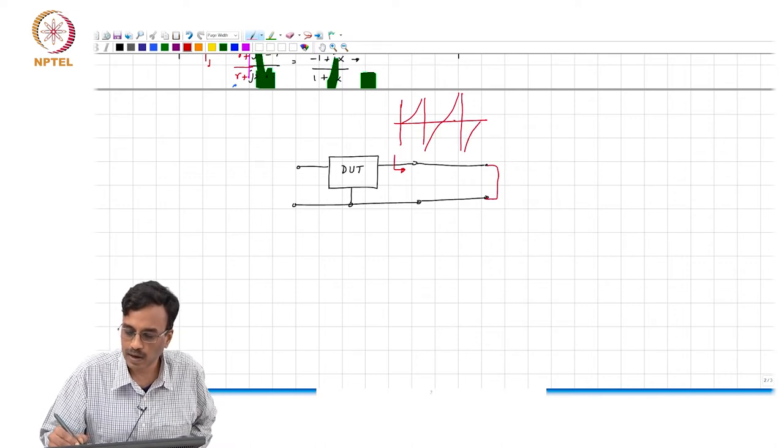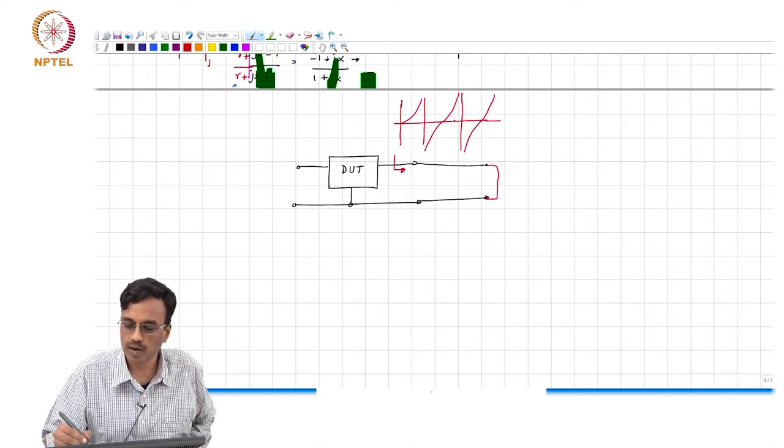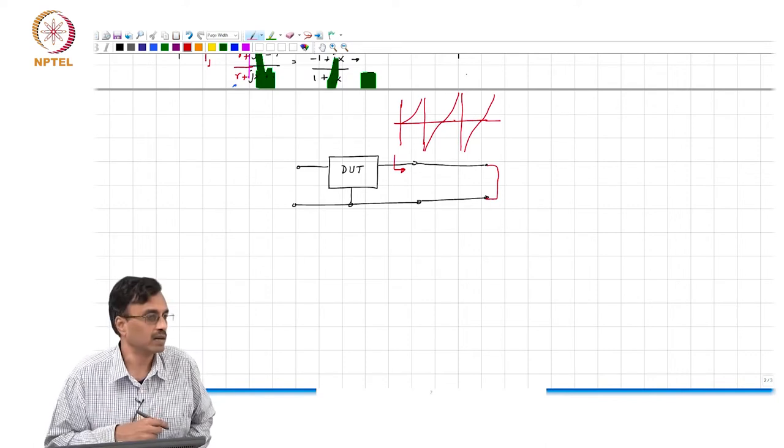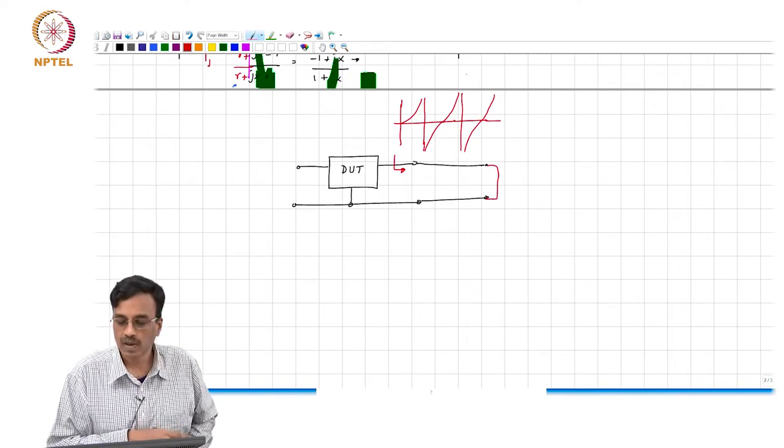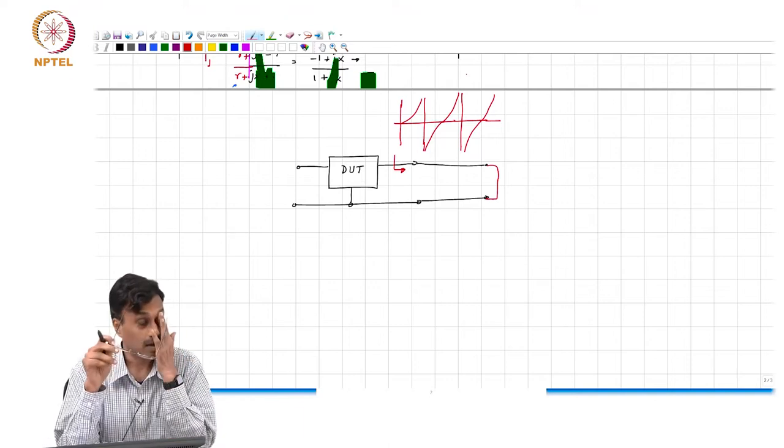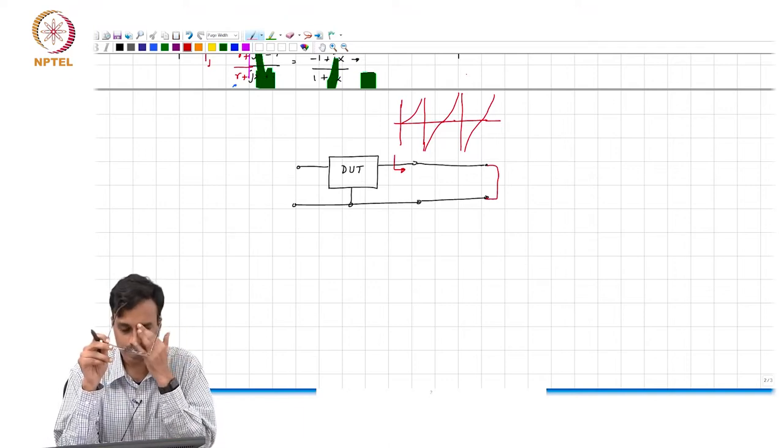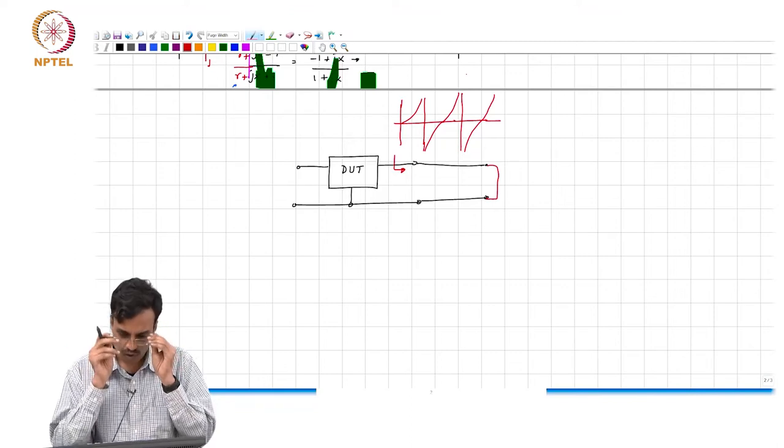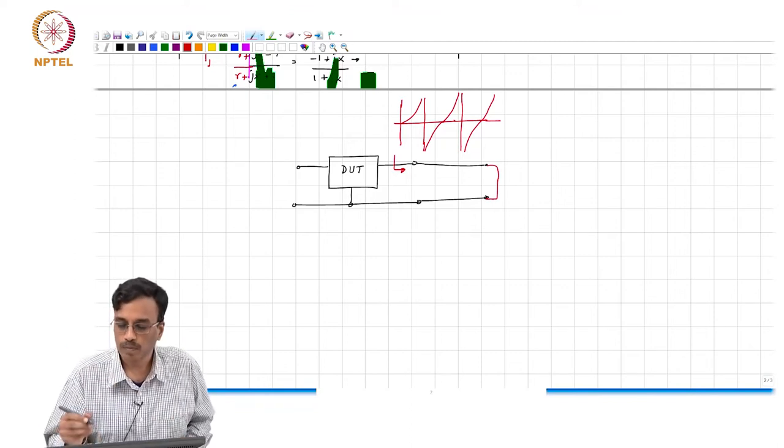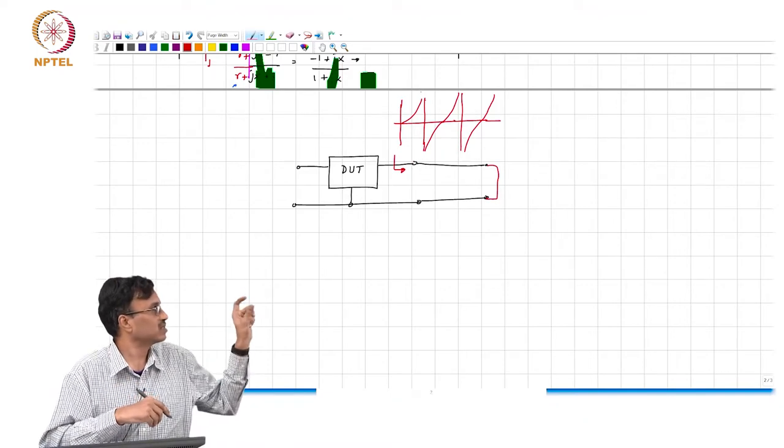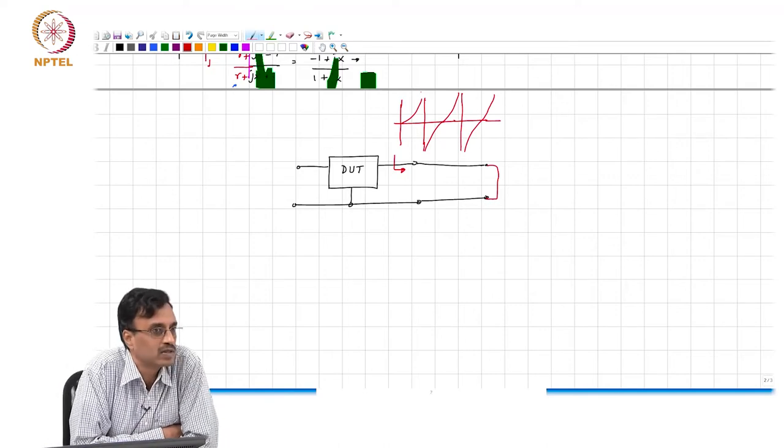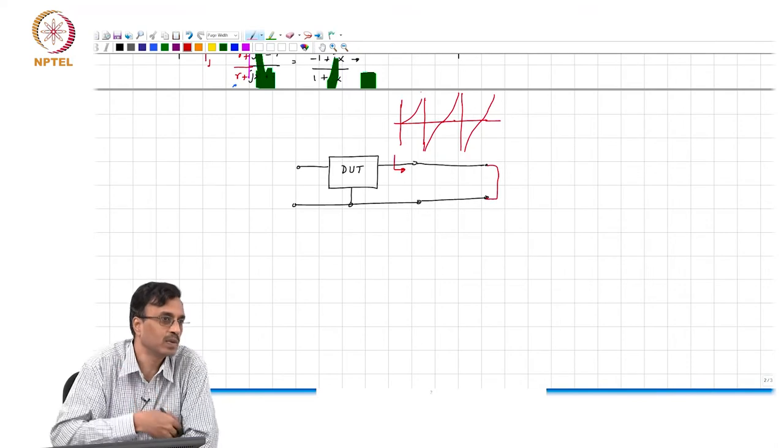It goes from looking like a short to an open and then again open to a short and so on, because it follows that tan omega times Td. So you can think of this therefore, if you see an impedance which is an open circuit, can you think of a simple impedance which becomes an open circuit at a certain frequency?